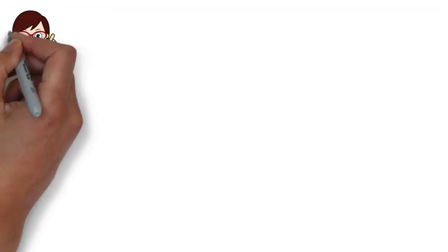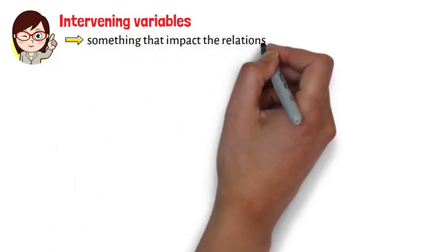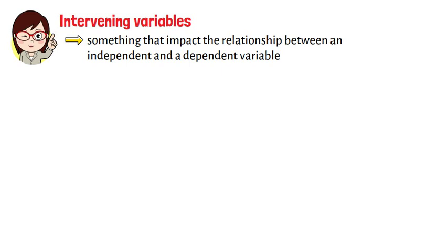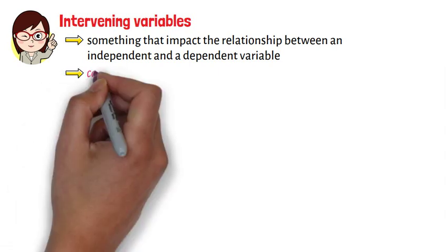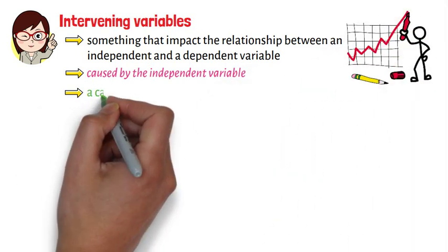As we can see, intervening variables are something that impact the relationship between an independent and a dependent variable. Usually, the intervening variable is caused by the independent variable and is itself a cause of the dependent variable.